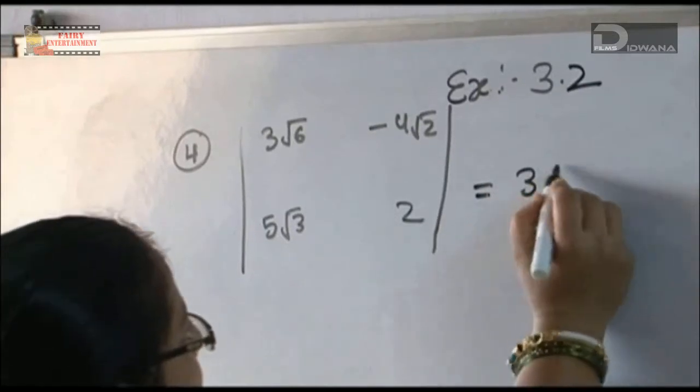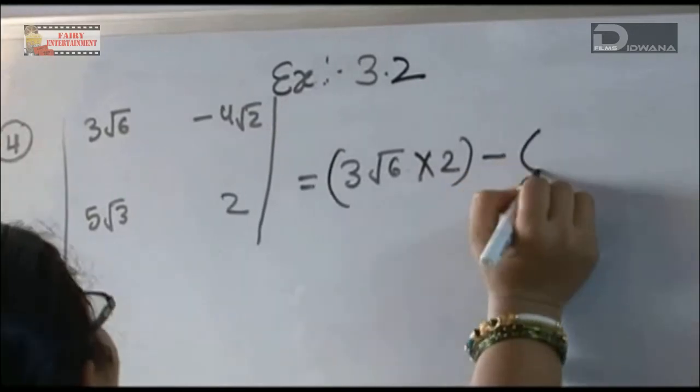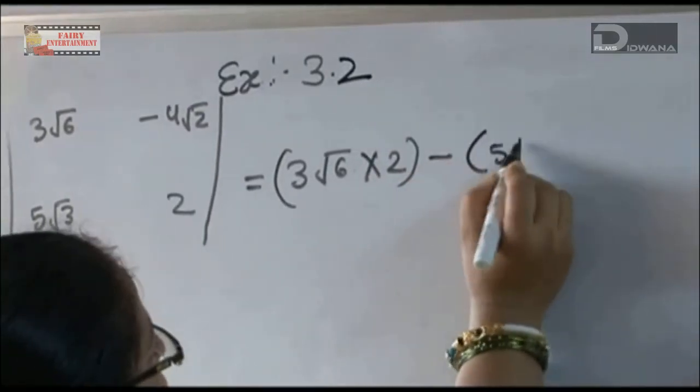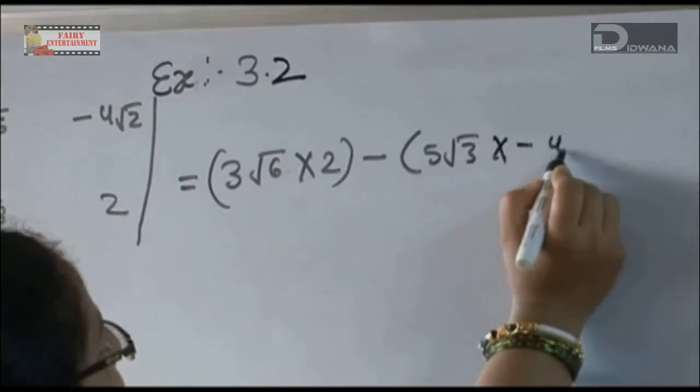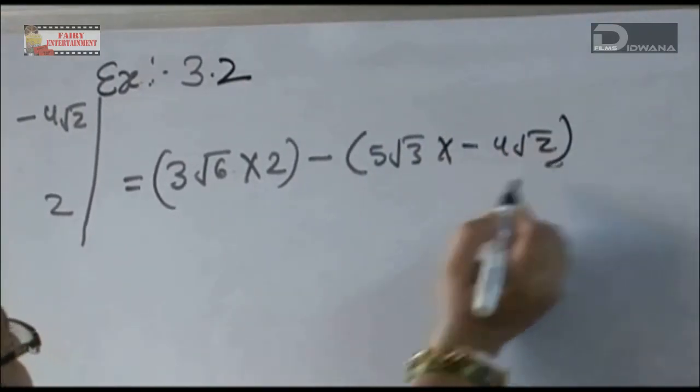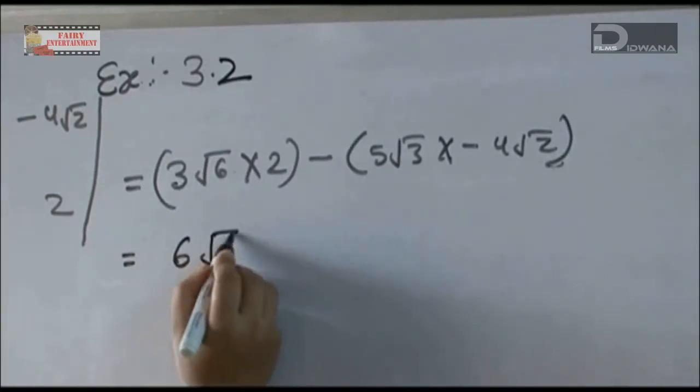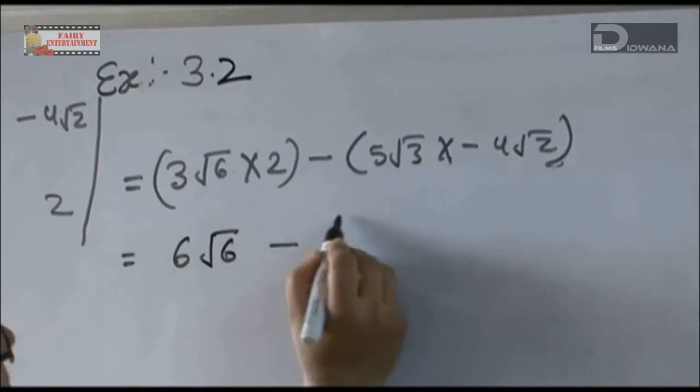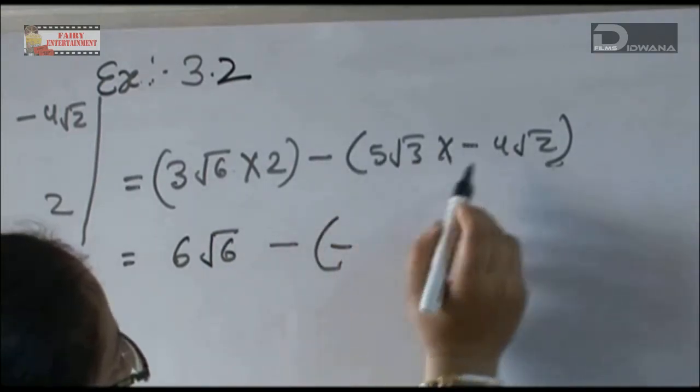3√6 into 2 minus 5√3 into -4√2. Here, 3 times 2 is 6, so 6√6 minus, again minus, 5 times 4 is 20.